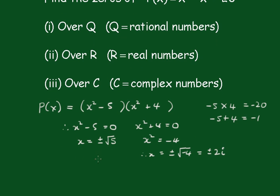So to answer the first part, there are no zeros over the rational field. It's clear these are irrationals. In part 2, the zeros are root 5 and minus root 5.